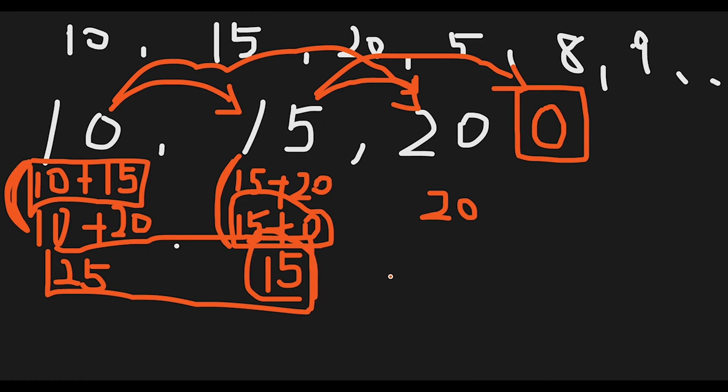That is the basic idea to solve this question. The time complexity of this solution is O(n) because we iterate through all numbers one by one. The space complexity is O(1) because we don't use any extra data structure — we use the input array itself. With that being said, let's jump into the code.